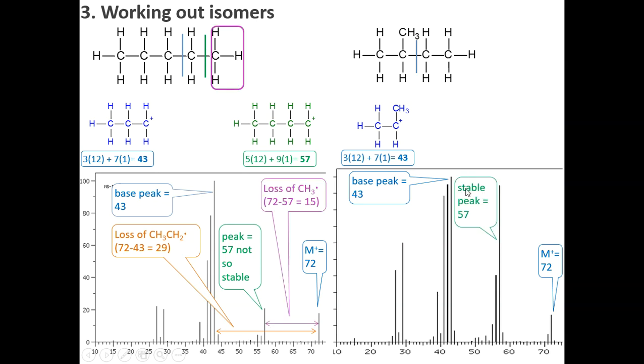And over here, we have quite a strong peak at 57 compared to this one. And that is because we have a secondary carbocation compared to a primary carbocation. So both of these are secondary, so they're both quite strong. Whereas here, both are primary for this one and this. But here, being bigger, it tends to fragment a little bit more. Right, and finally, we've just to say it's been a loss of a methyl.